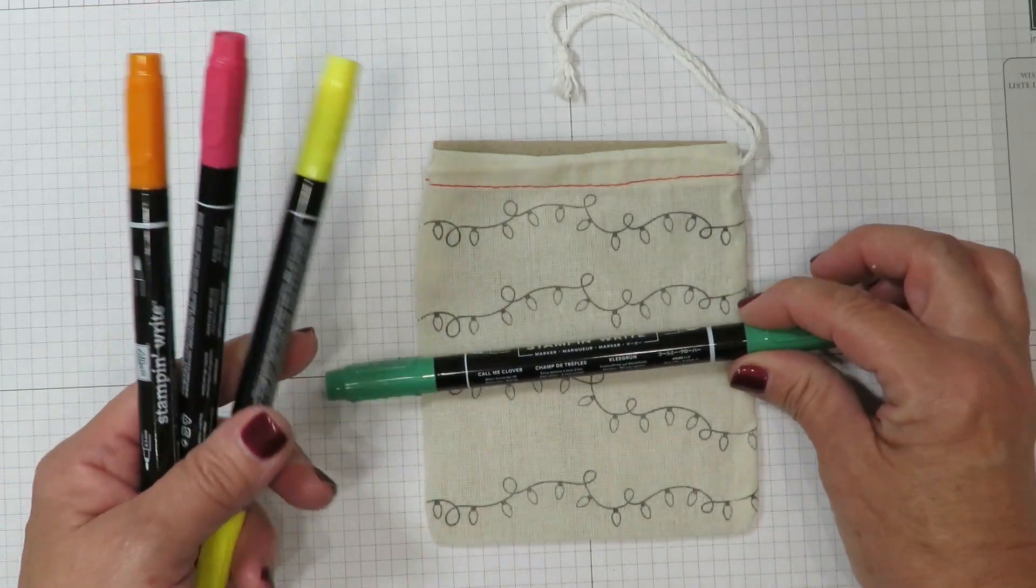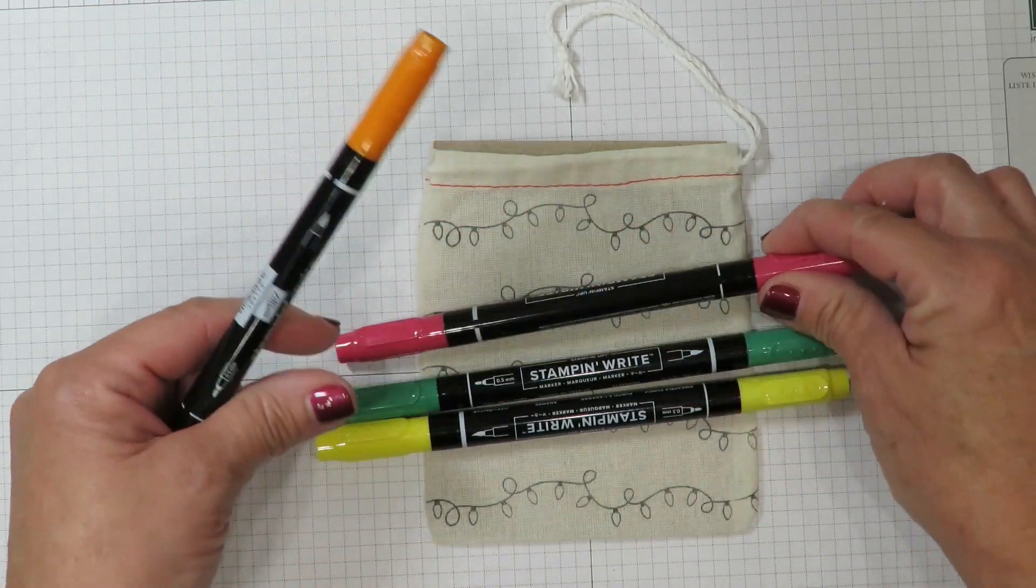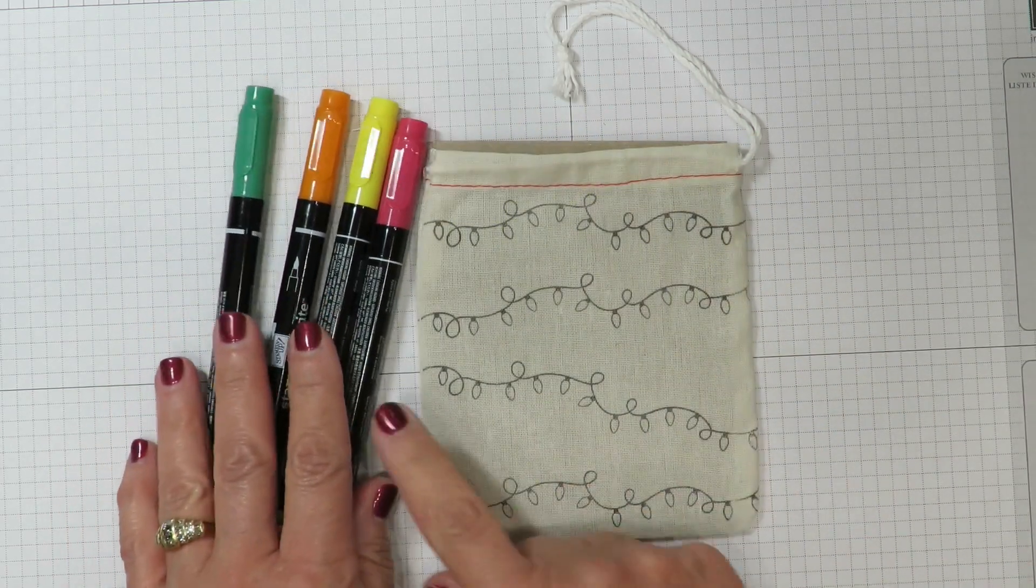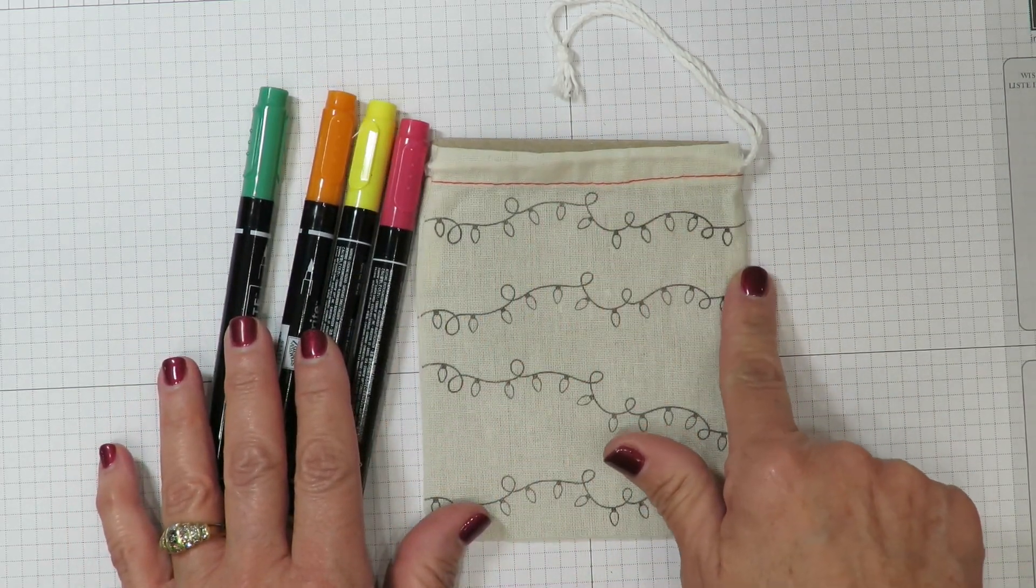I have Call Me Clover, Pineapple Punch, Lovely Lipstick, and Pumpkin Pie. And what I'm going to be doing is I'm going to be alternating these colors to fill in those light bulbs.